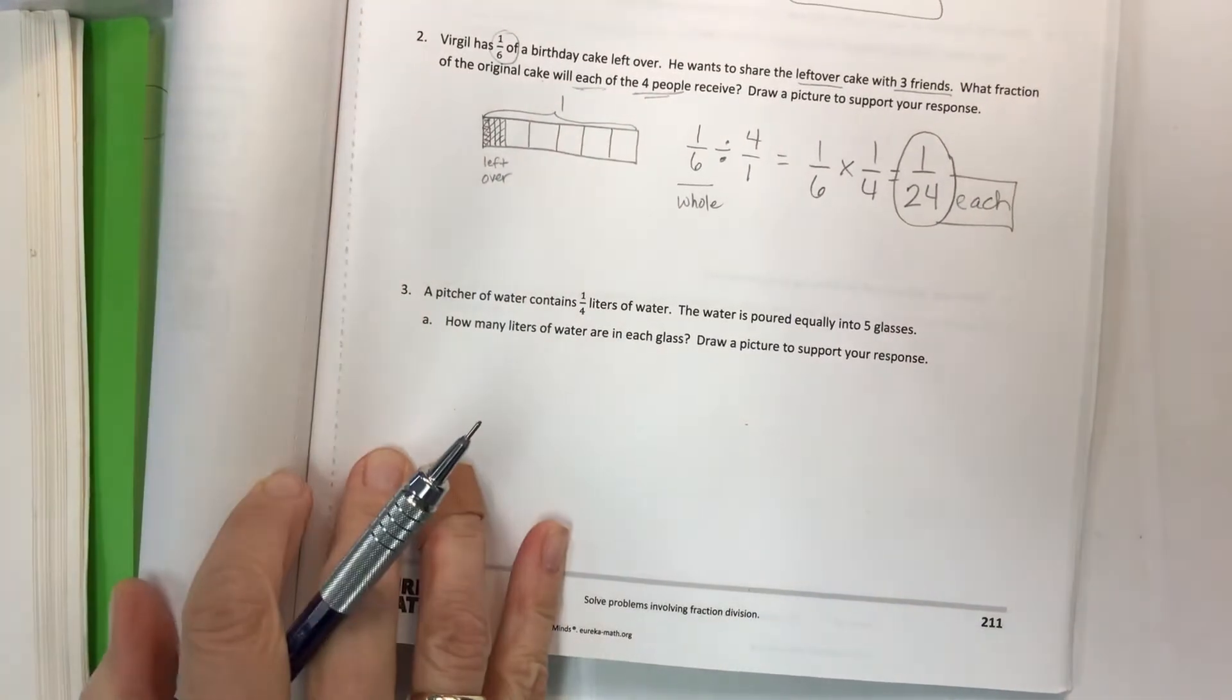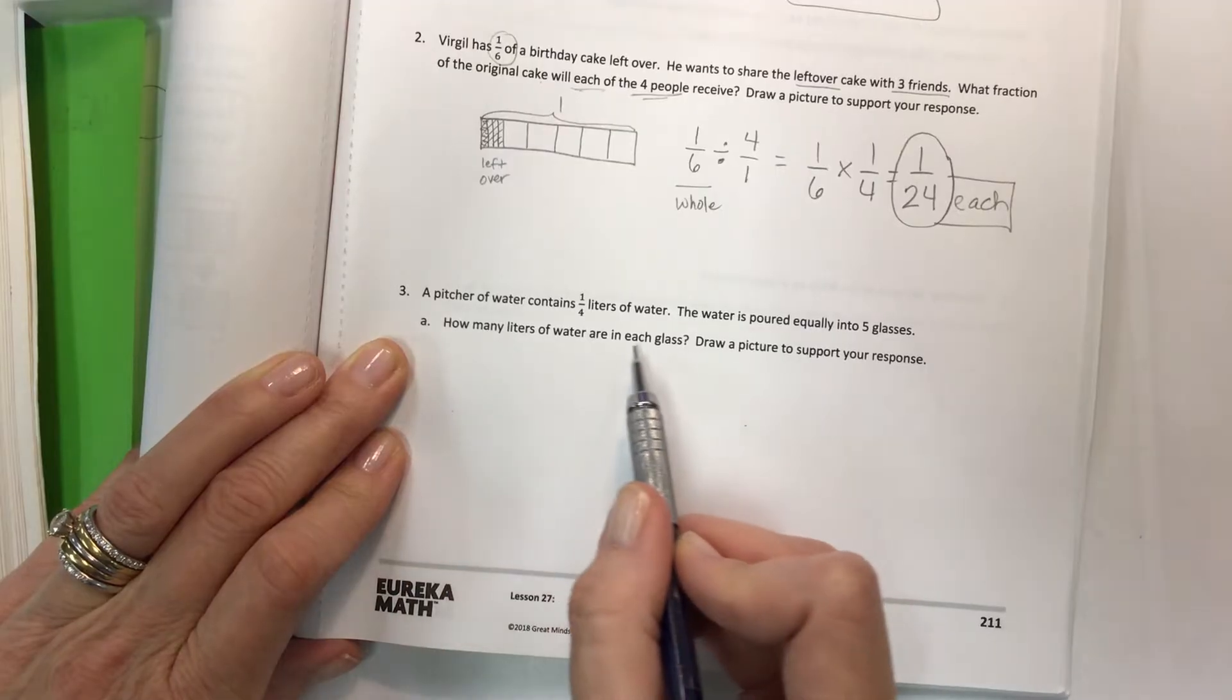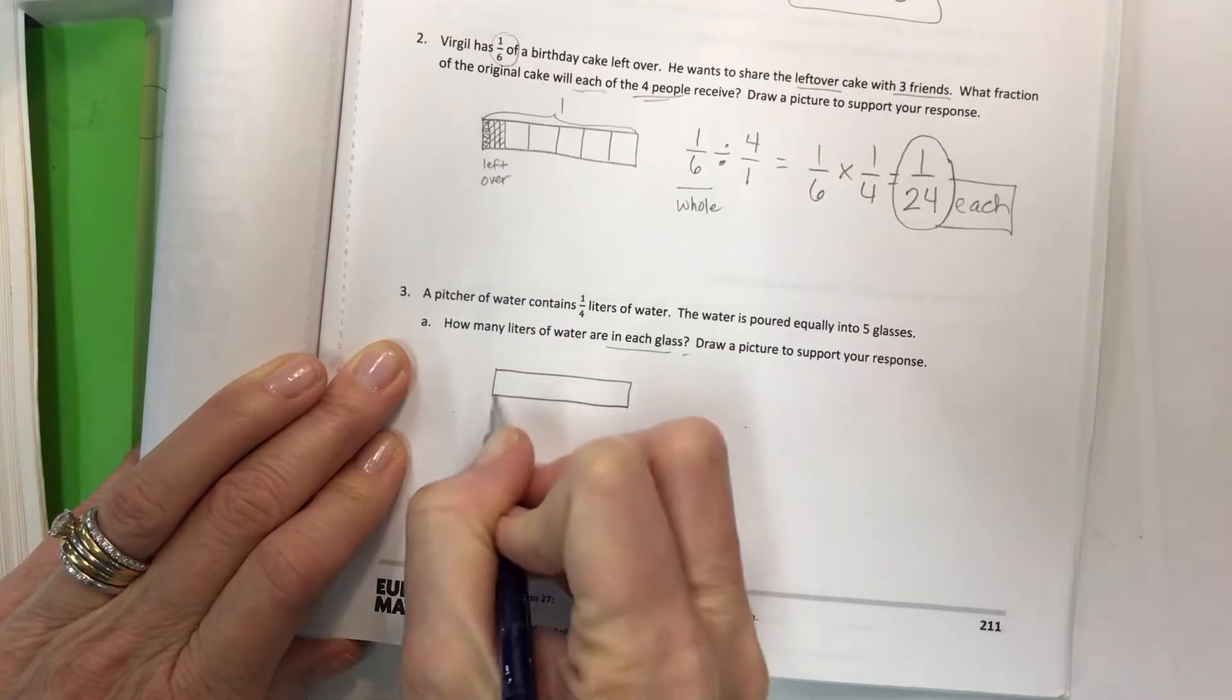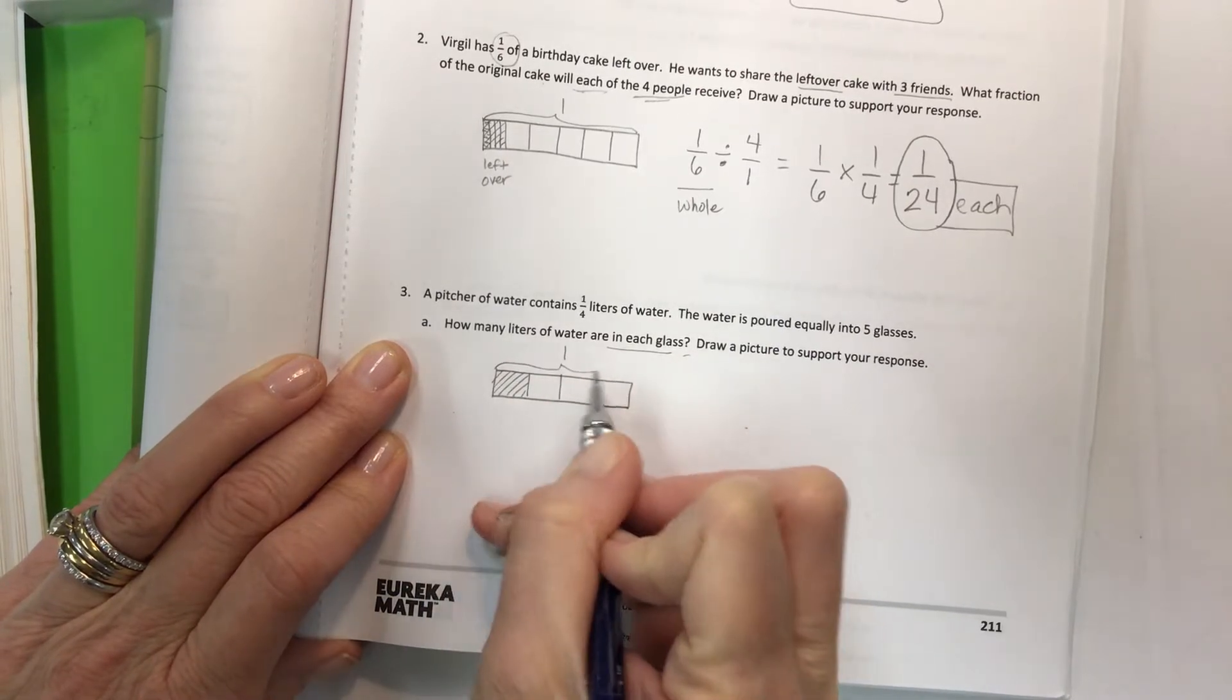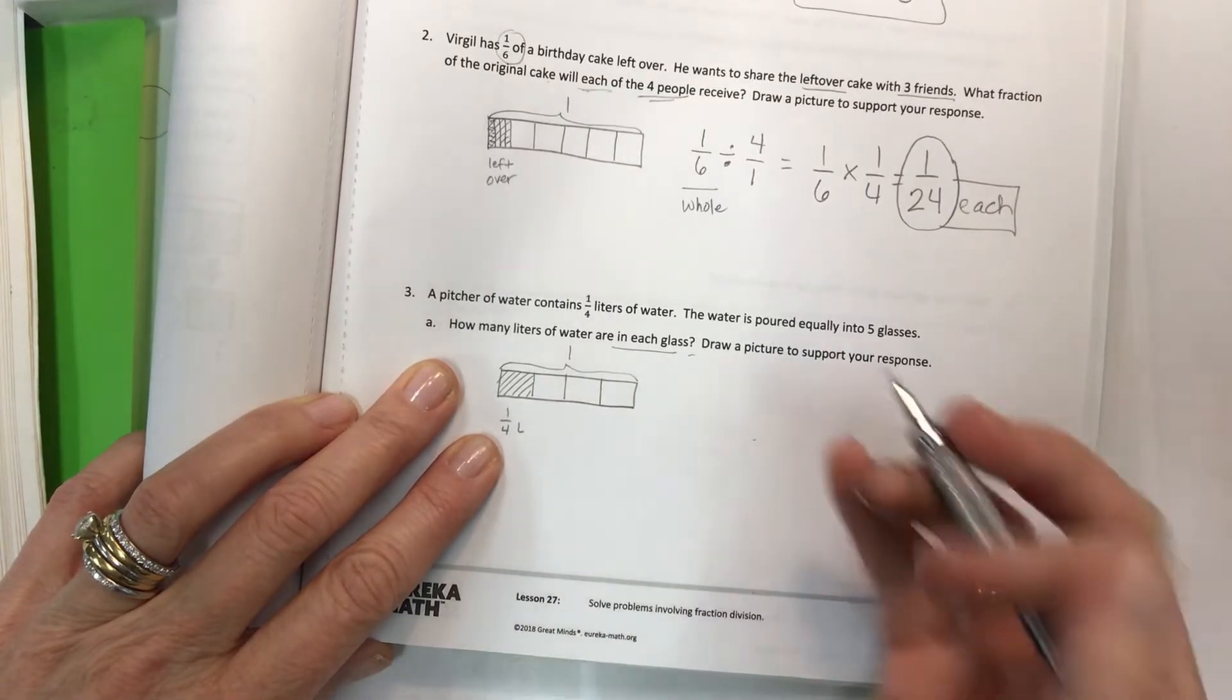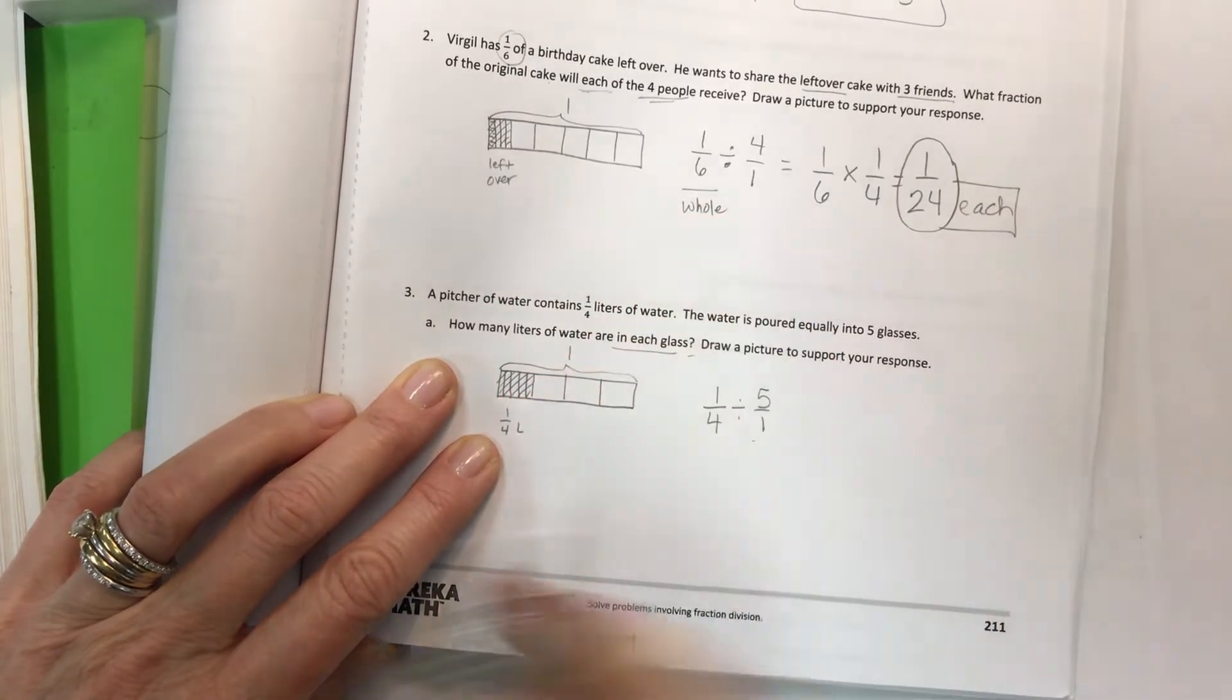Number three. A pitcher of water contains one-fourth liters of water, or I would say one-fourth liter, because it's only a fraction of one. The water is poured equally into five glasses. How many liters of water are in each glass? Draw a picture to support. So if we only have a picture that contains one-fourth, then the whole thing I have, if that's my pitcher, it only contains this. This is one pitcher, and this is my one-fourth, one-fourth liter. Now the water is poured equally into five glasses.